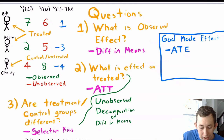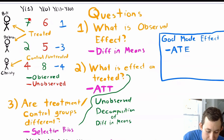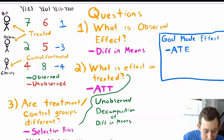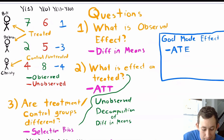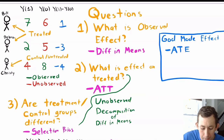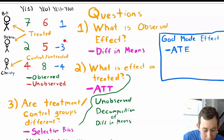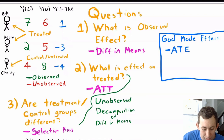That's reflected by the fact that their y1s and y0s are green for their respective x value. Now if we tried to just observe the effect, we would take the average of these two numbers here, subtract the average of Christy's number, and we would get the difference in means — and that would be what we estimated as the average treatment effect. But in reality, if we knew everything about every person, the actual effect would be this average treatment effect, where we would just take the average of the 1, the negative 3, and the minus 4.